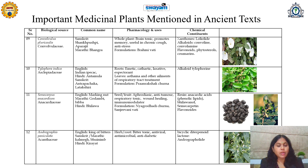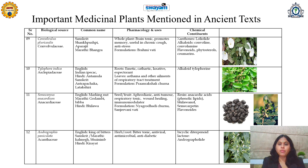The next plant is Andrographis paniculata, belonging to family Acanthaceae. In English, it is called as King of Bitters. In Sanskrit and Marathi, it is called as Kalamegh or Bhuinim; in Hindi, it is called as Kirata. It is very bitter in taste — that is why it is called a bitter tonic. This bitter tonic improves appetite and is also useful as antiviral, antimicrobial, antidiabetic, and for treatment of various stomach-related diseases, due to the presence of bicyclic diterpenoid lactones — that is, Andrographolide.